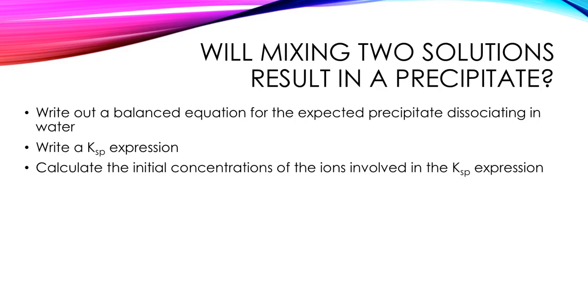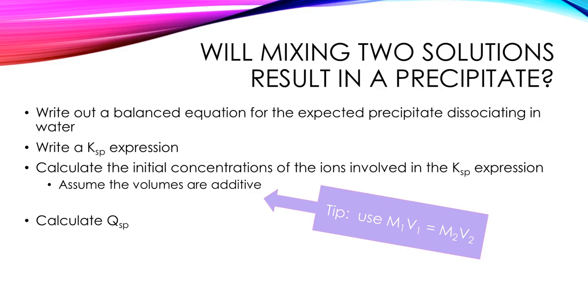The next thing we need to do is calculate the concentrations of the ions that are part of the precipitate. We're trying to figure out if it will form or not. We are going to assume that the volumes are additive. And in order to do these calculations, we're going to use M1V1 equals M2V2. And then once we have those concentrations, we can calculate QSP. We're going to take those concentrations and substitute them into the KSP expression, but we're going to call it Q, the reaction quotient, because we don't know what's going on yet.